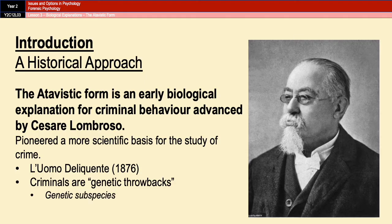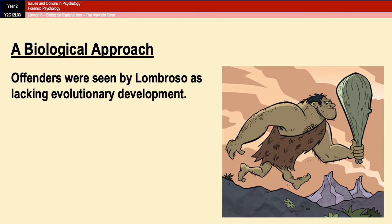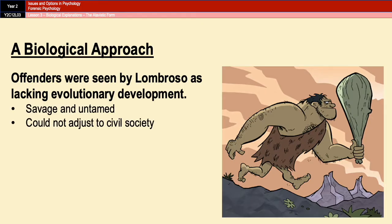The big suggestion that he makes is that criminals are biologically different from non-criminals. In the eyes of Lombroso, criminals were seen as lacking evolutionary development. He suggested that they have a savage and an untamed nature, which results in them finding it next to impossible to adjust to the demands of everyday civilized society.